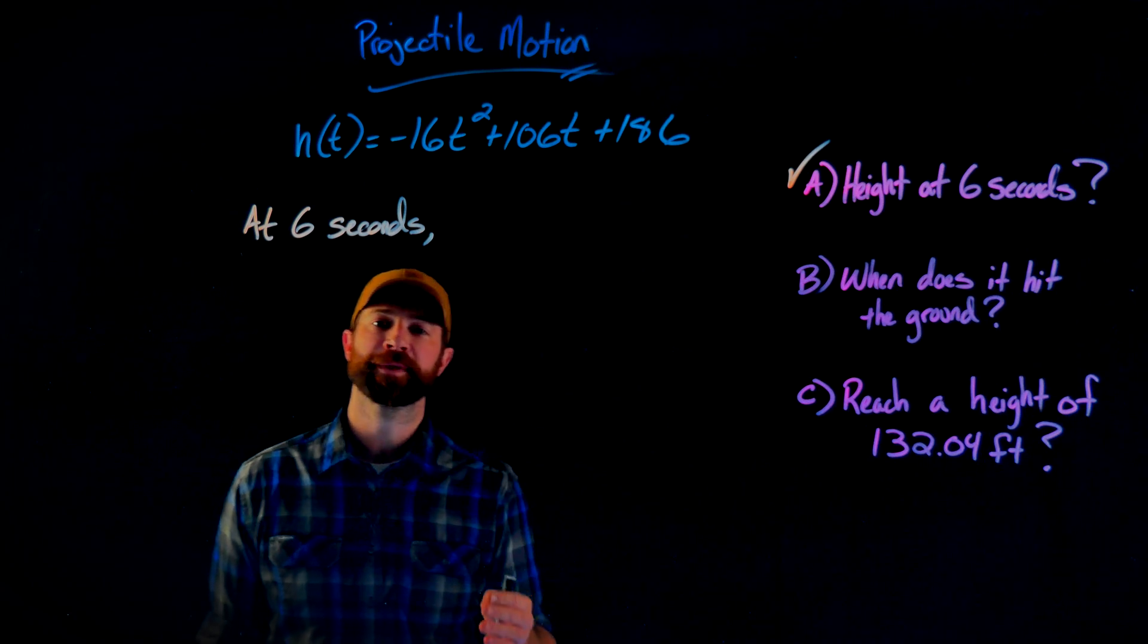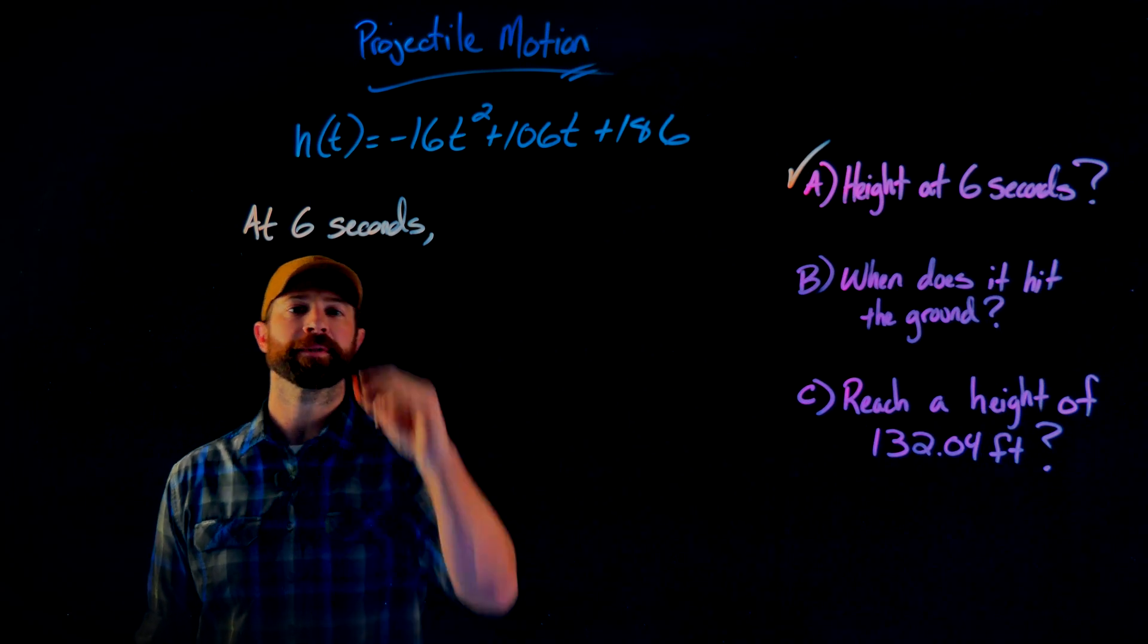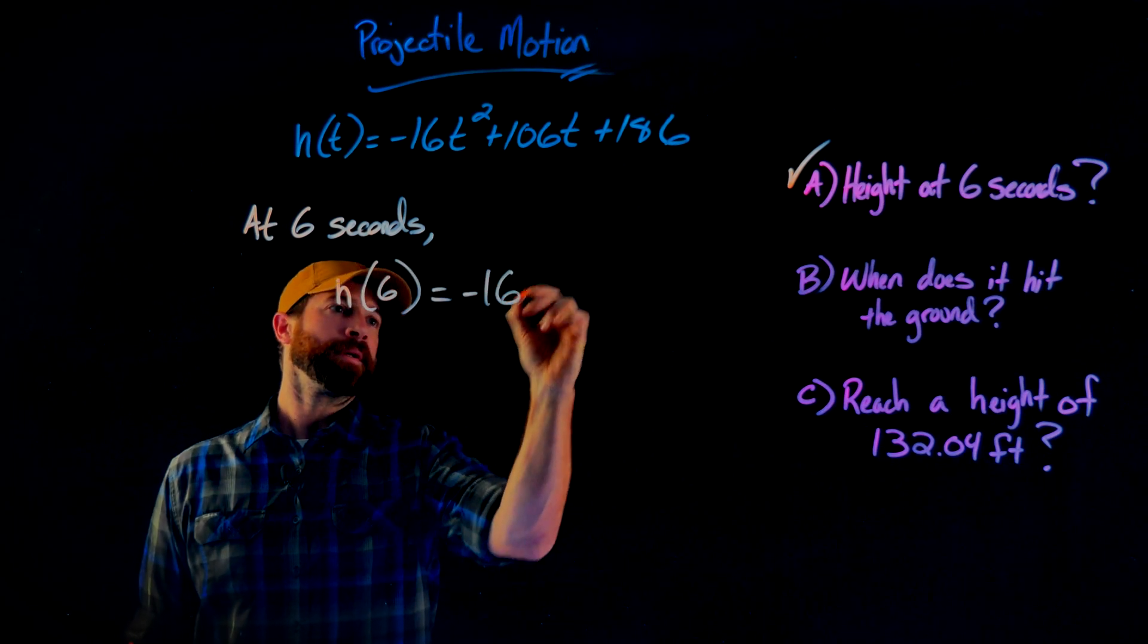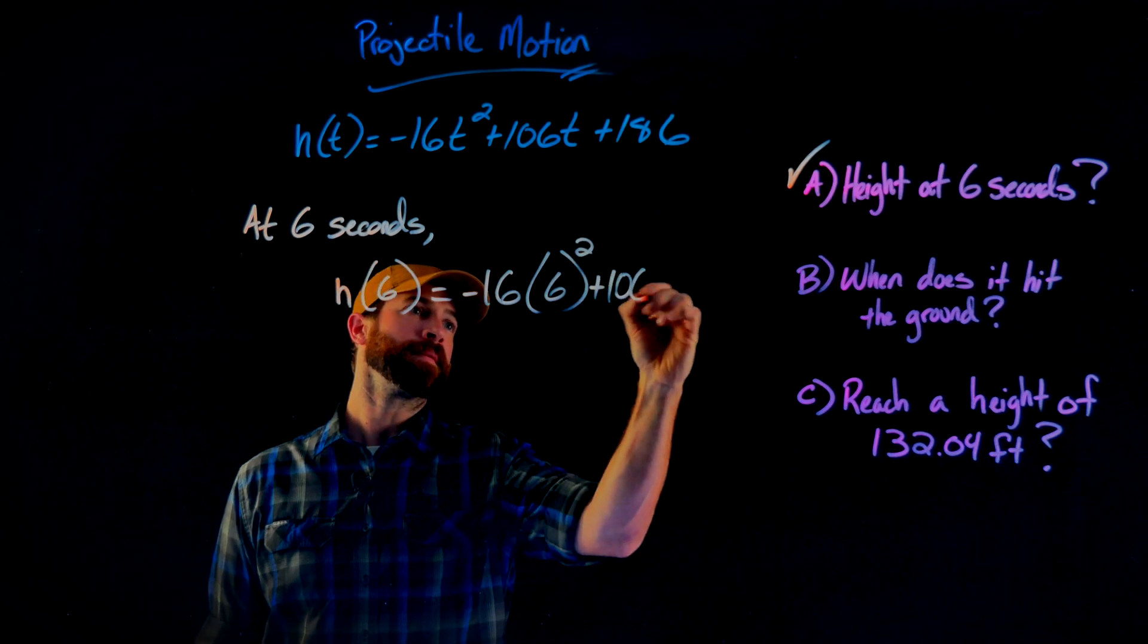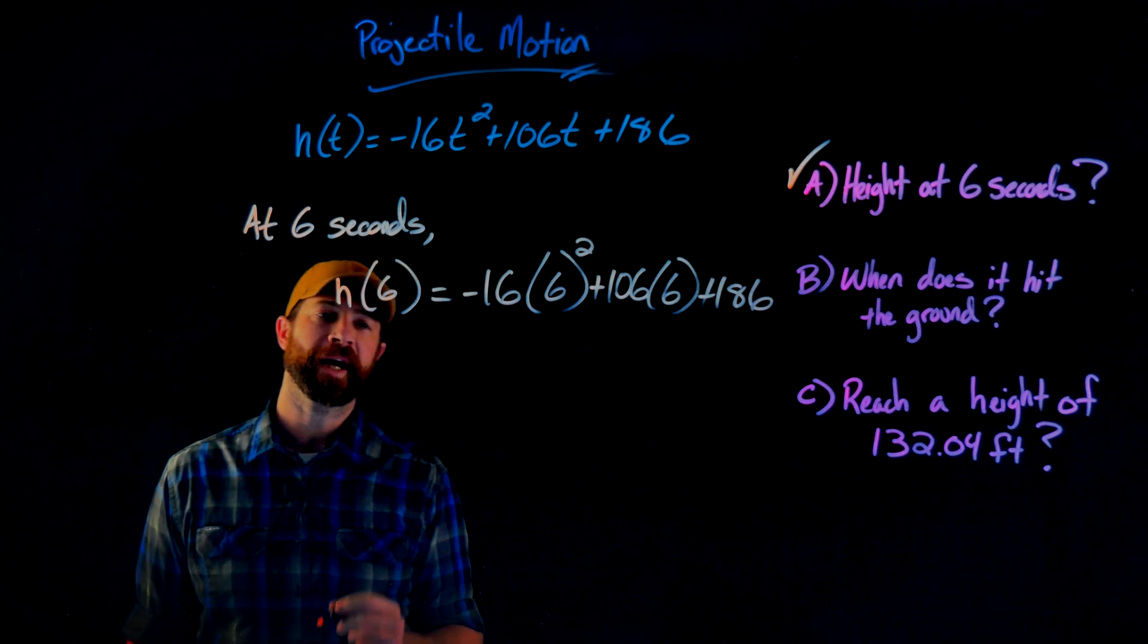To find the height of the object at six seconds, we're going to plug in t equals six into this function. So we need to evaluate h of six. We plug in six for our independent variable.